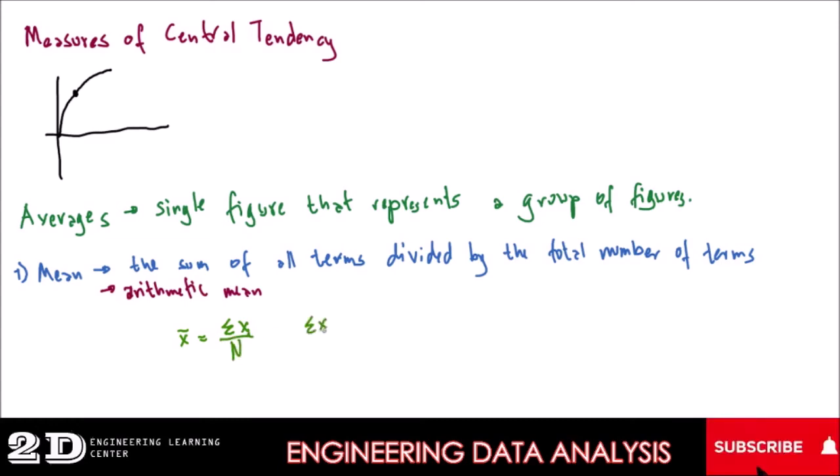or our summation of x is equal to the sum: x1 plus x2 plus x3 plus dot dot dot up to xn.